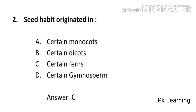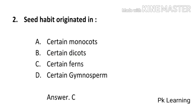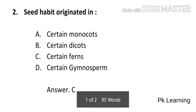Next question: C. David originated in — (a) Salvinia monocards, (b) Salvinia dicards, (c) Salvinia ferns, (d) Gymnosperms. The answer is (c) Salvinia ferns. C. David originated in Salvinia ferns is the correct option.